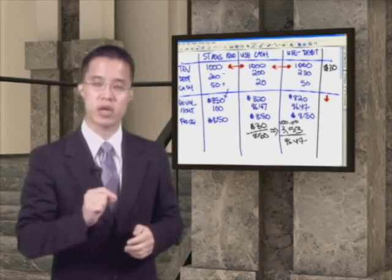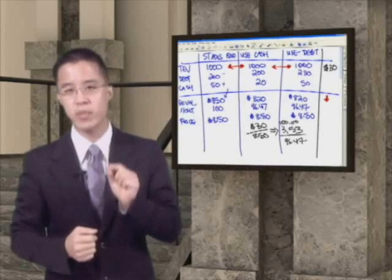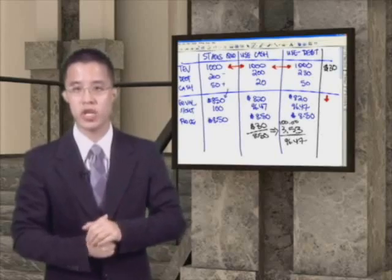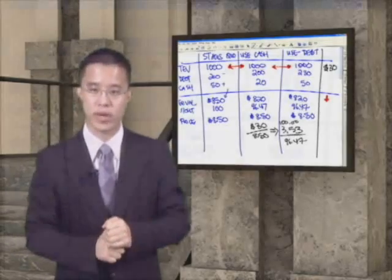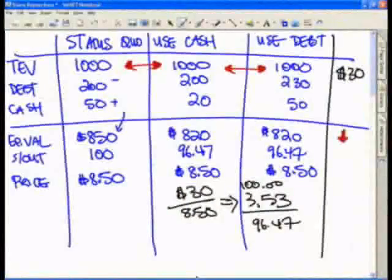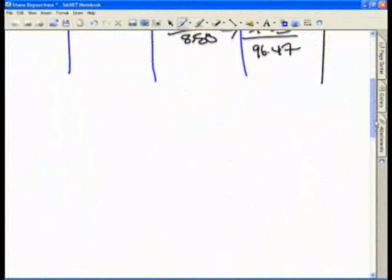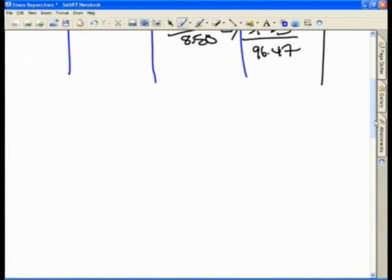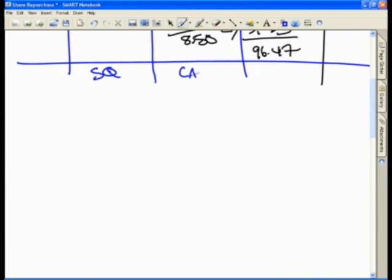Let's look at this from a second scenario. Let's look at how this might affect the income statement and earnings per share. Let's turn back to our exhibit at this point. Using the same three scenarios: status quo, use cash, and use debt. Looking at the income statement, let's start off, for instance, with EBIT.